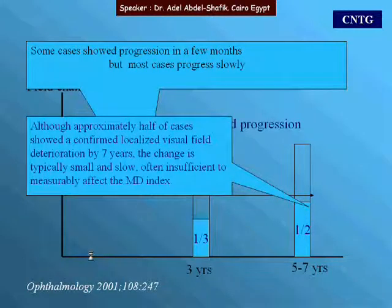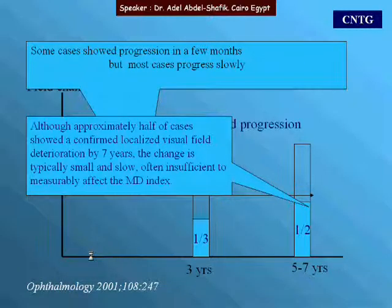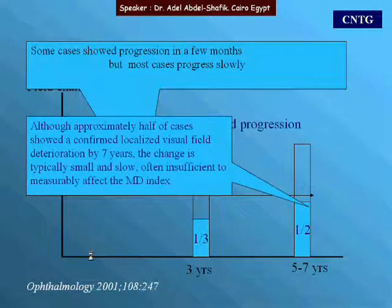Although approximately half of the cases showed confirmed localized visual field deterioration at seven years, the change was typically small and slow, often insufficient to measurably affect the mean deviation index.